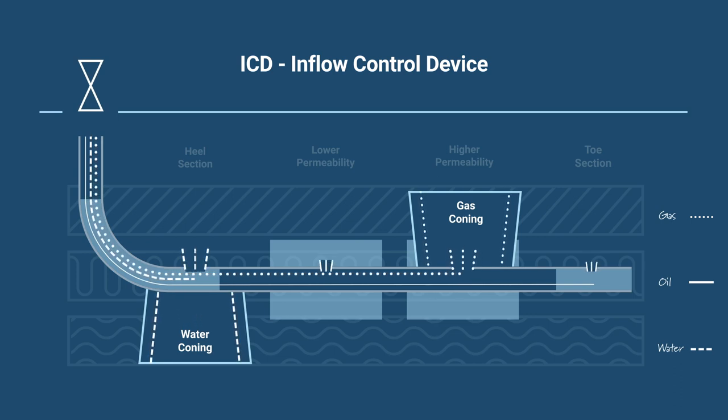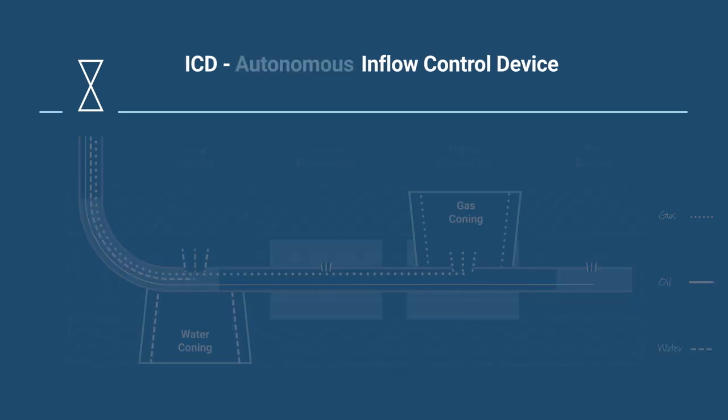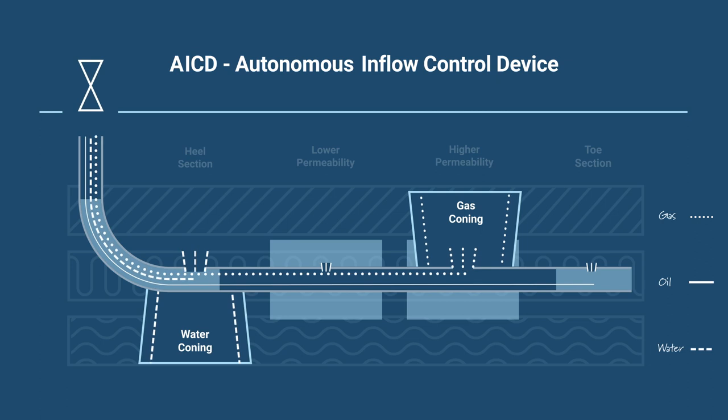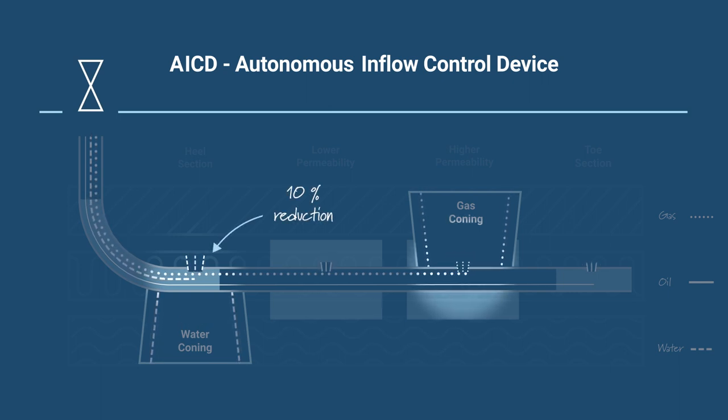To solve this issue, a second category was invented in 2006, the Autonomous Inflow Control Device, or AICD. The AICD also delays premature water and gas breakthrough, but will, unlike the ICD, also choke smaller percentages of water and moderate percentages of gas after breakthrough occurs.